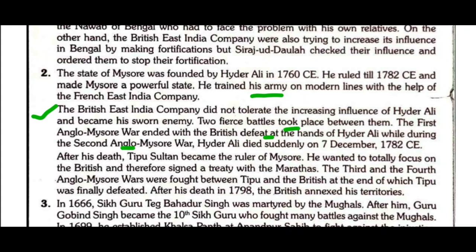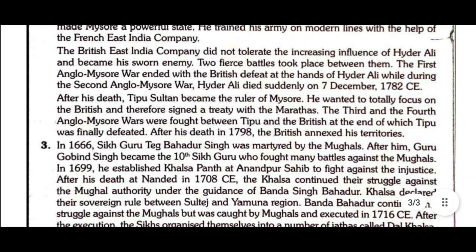During the Second Anglo-Mysore War, Hyder Ali died suddenly on 7 December 1782 CE. After his death, Tipu Sultan became the ruler of Mysore. Tipu wanted to focus on the British and signed a treaty with the Marathas. The Third and Fourth Anglo-Mysore Wars were fought between Tipu and the British, at the end of which Tipu was finally defeated. After his death in 1799, the British annexed his territories.